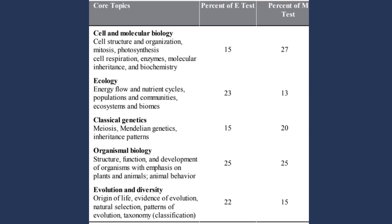The third thing is the approximate number of questions. On this table, you can see the percentage distribution of five main sections depending on the special section you have chosen, whether ecology or molecular biology. As you can see, they are marked here as E-test and M-test. Thus, this exam includes all sections that differ only in the amount of a couple of questions. For this reason, it's very important to know all the topics very well for successful passing through this biology test.